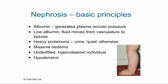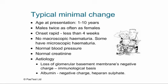Typical minimal change: age at presentation is generally 1–10 years. Presentation before 1 year suggests Finnish-type congenital nephrotic syndrome — a very different disease. Presentation over age 10 suggests FSGS or MPGN, disorders of older children. Boys are affected twice as often as girls. Onset is rapid — from being fairly well to presenting with gross oedema is generally less than four weeks and in many cases just a few days. Minimal change typically doesn't have macroscopic haematuria, blood pressure is normal, and creatinine is normal.